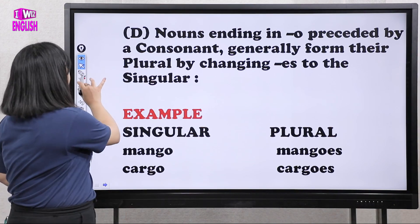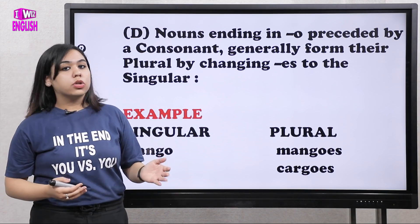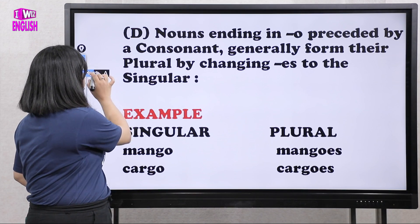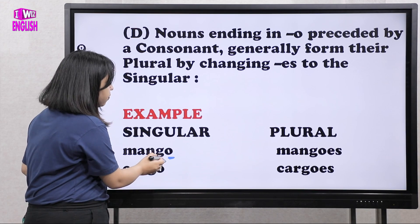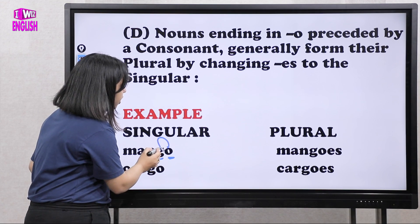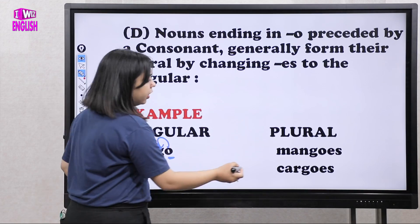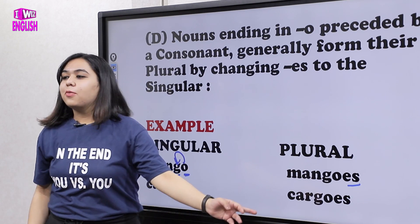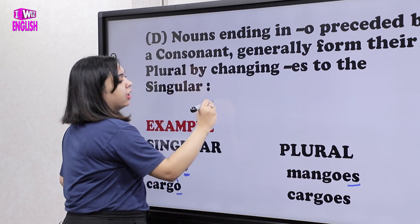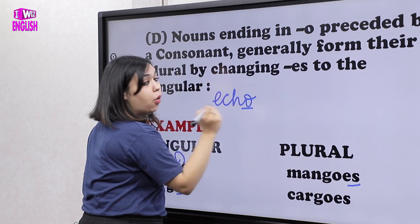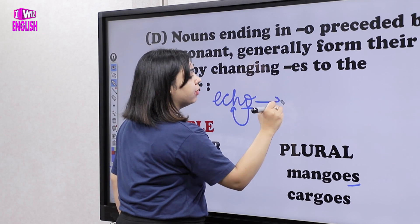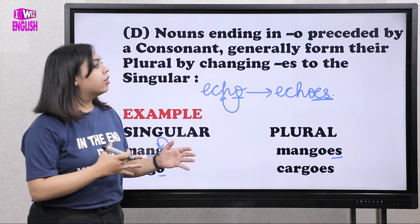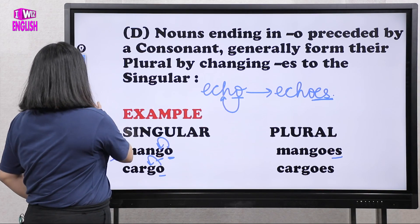The fourth type: nouns ending in -o preceded by a consonant generally form their plurals by adding -es to the singular. If a noun ends with -o and the letter before it is a consonant, add -es. For example: mango → mangoes, cargo → cargoes, echo → echoes. This is how you form plurals from these singular nouns.